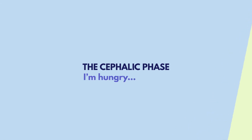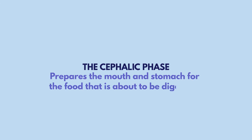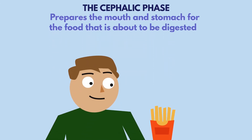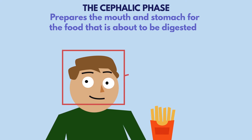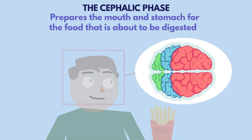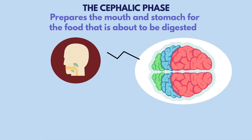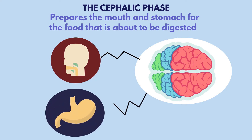Let's start with the cephalic phase. The cephalic phase, or head phase, prepares the mouth and stomach for the food that is about to be ingested. The sight, smell, taste, or thought of food activates neural centers in the cerebrum, hypothalamus, and medulla oblongata. Responses are then sent to salivary glands in the mouth to stimulate salivation, and also to the stomach, where stimulation leads to the secretion of gastric juices.